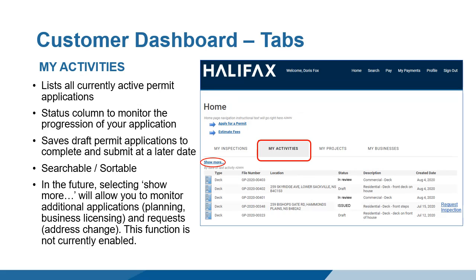The My Activities tab contains a record of all permits currently in the application process. You can see the application status in the Status column. As the permit moves through the application process, the status will change. This allows you to monitor the progress of the application online.